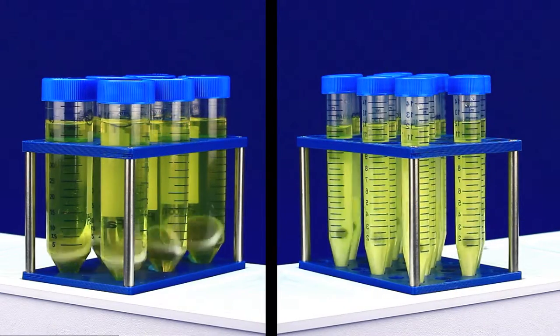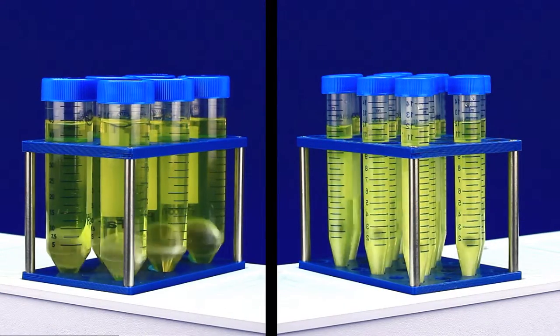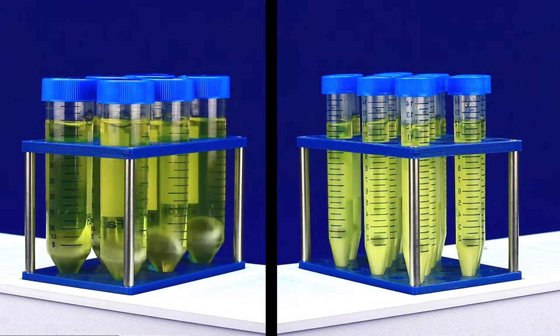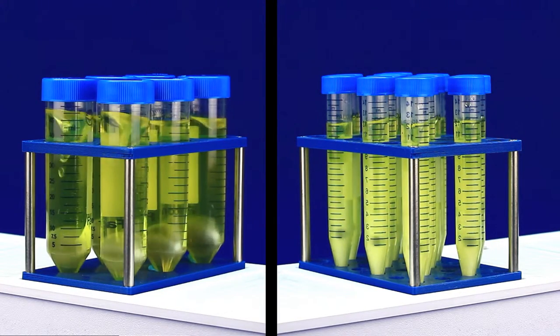Here you can see stir discs in the 50ml tubes, and our tuning fork stirrers in our 15ml tubes. Both create a strong vortex to make sure your samples are adequately mixed.